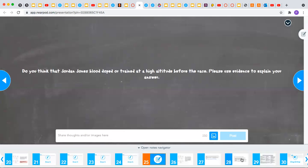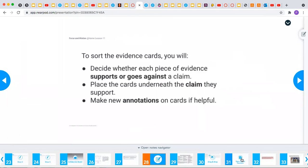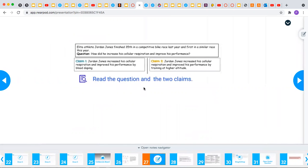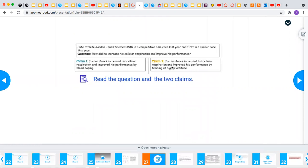So once you have looked at the evidence, talked with your classmates about it, then you are going to sort the evidence. So you're going to decide whether each piece of evidence supports or goes against which claim. So there are two claims right here, claim one and claim two. And you have to decide if you think Jordan Jones improved his performance by blood doping, or if he improved his performance by training at a higher altitude.